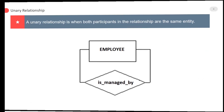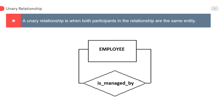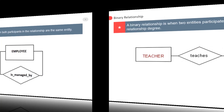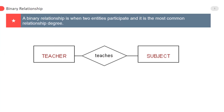The first is the unary relationship. A unary relationship is when both participants in the relationship are the same entity — the entity type makes a relationship with itself. For example, the employee and manager relation: the manager is a person who manages all the employees.